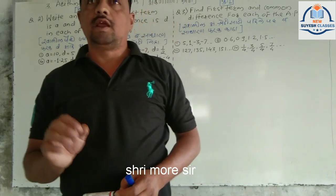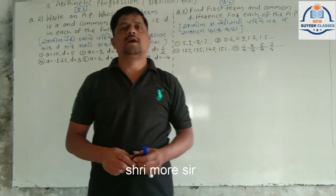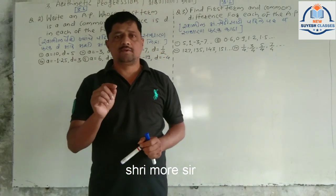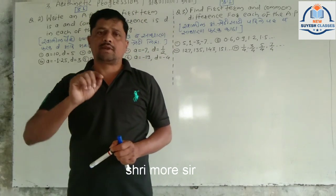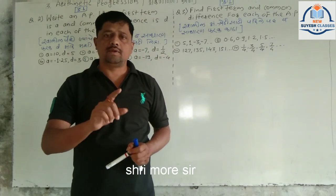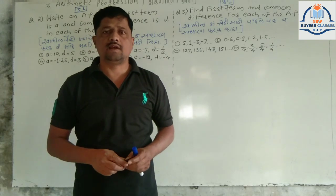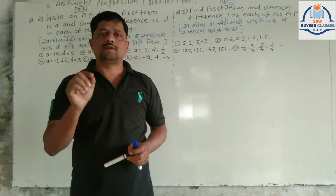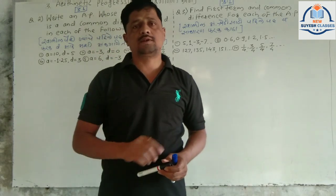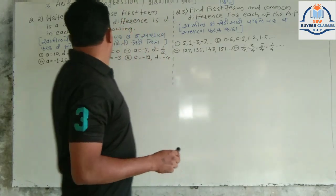The given sequence — the answer is 4. The difference between terms is the same. We'll have the choice. The answer is, the question is about AP.